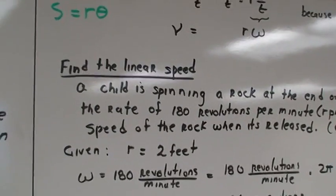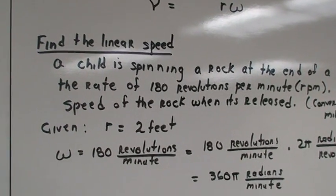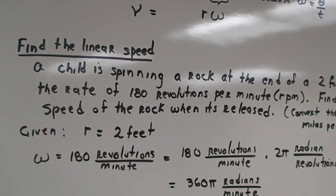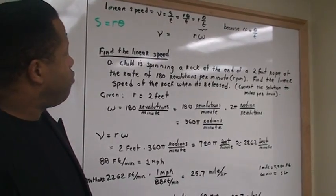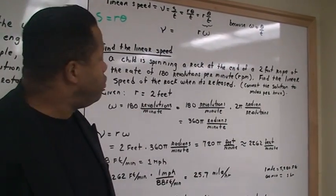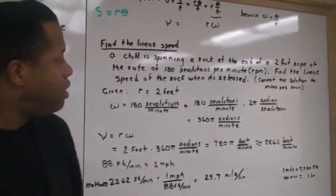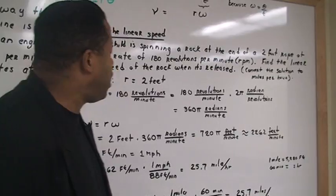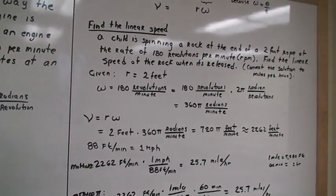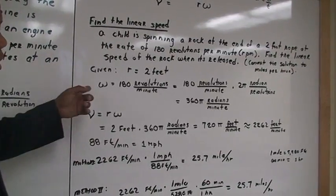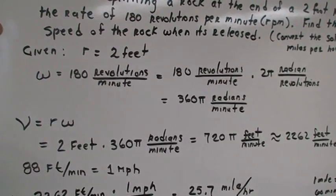Let's do a problem. Find the linear, we're finding the linear speed of an object. Let's say a child is spinning a rock at the end of a 2 foot rope at the rate of 180 revolutions per minute. Find the linear speed of the rock when it's released. And we want to convert the solution to miles per hour. So given is a radius of 2 feet. And omega, right, is equal to 180 revolutions per minute.